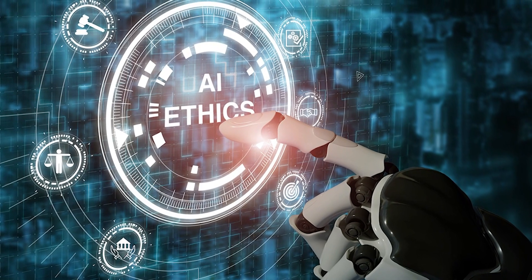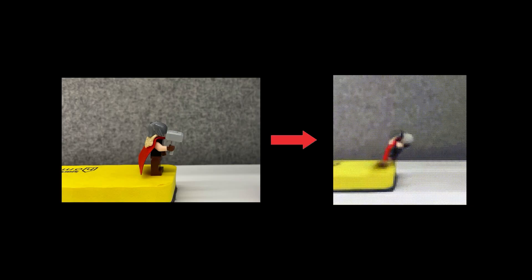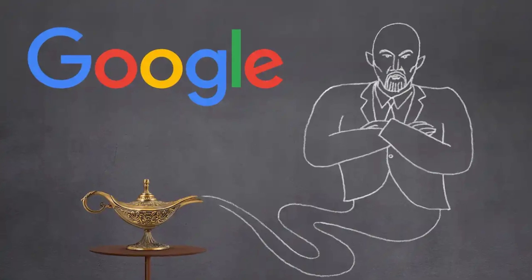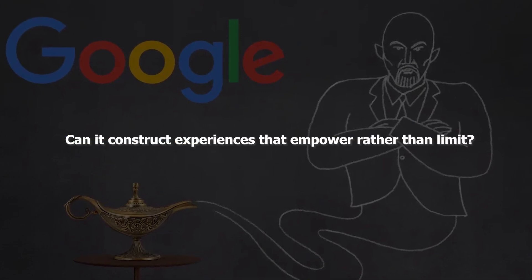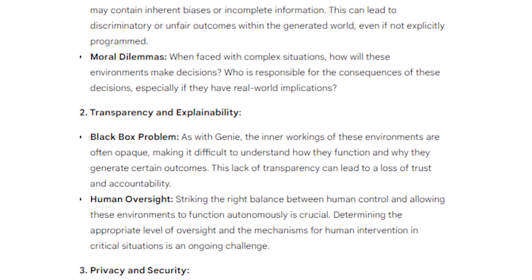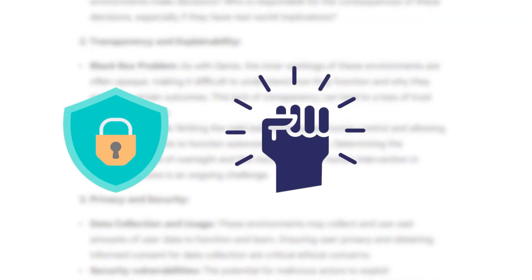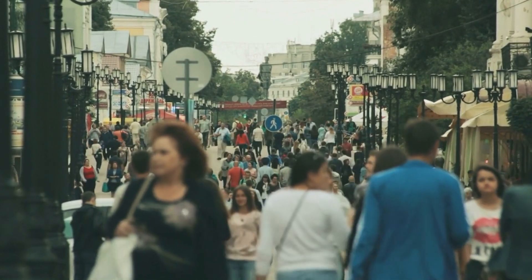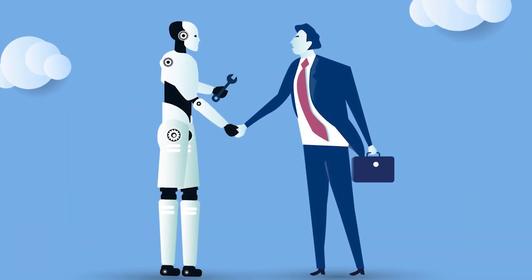Having explored Genie's potential, let's consider the ethical questions that come to the forefront, especially given its ability to navigate uncharted digital terrains. Genie offers us the power of creation, but we must use it responsibly — guided by key principles such as transparency, fairness, and accountability. Can Genie innovate without reinforcing existing stereotypes? Can it construct experiences that empower rather than limit? Issues of privacy, autonomy, and misuse demand our attention, and we must establish measures to ensure these technologies enhance human potential rather than diminish it.